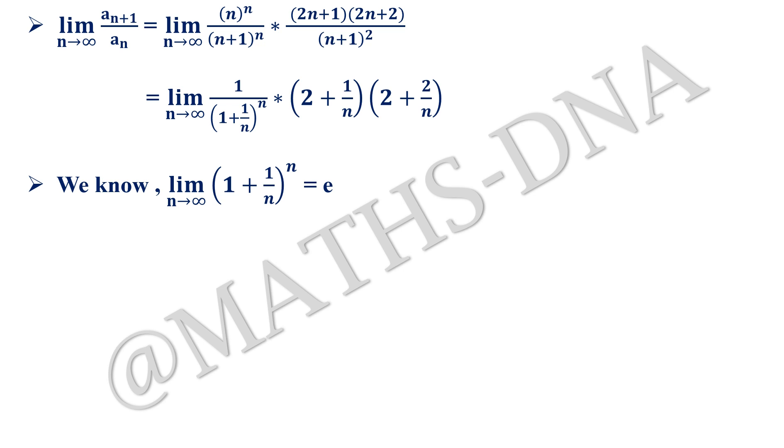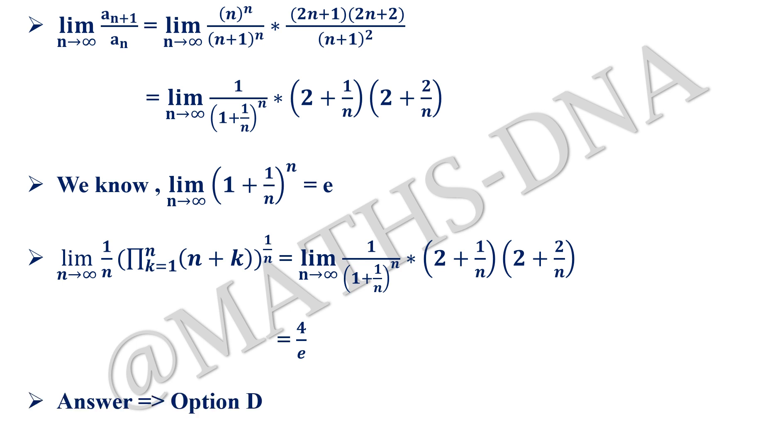So we put the value. We get limit n tends to infinity 1 upon 1 plus 1 by n whole raised to n, into 2 plus 1 by n, into 2 plus 2 by n. That gives us, when we put the value, 4 by e, because 1 upon n when n is infinity gets 0, and 2 upon n when again n is infinity gets 0. Hence the correct answer is option d, 4 by e.